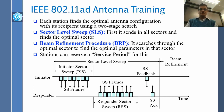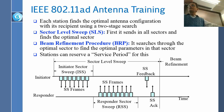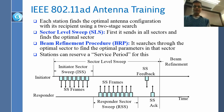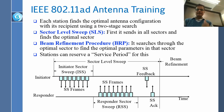First we do a sector level sweep. I can divide 360 degrees into four sectors, three sectors, or whatever number of sectors. If I divide into three, that is 120 degrees. If I first try to figure out which 90-degree sector you are in, and then once we find out the sector, we find out which direction in that sector you are in. Sector level sweep extends in all sectors and finds the optimal sector, and then the beam refinement procedure finds inside the sector what position you are in.